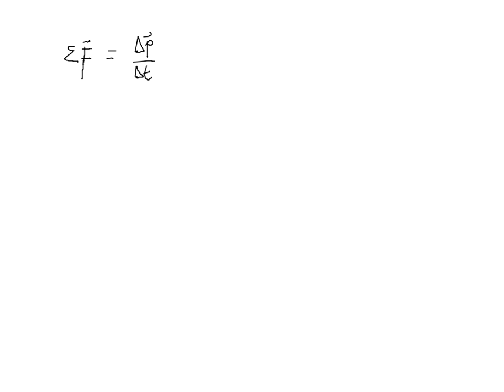The net force being zero is a special case of this equation. If the net force is zero, then the change in momentum would be zero, and that's what we've been discussing in previous lessons. But this time we will learn what happens if the net force on a system is not equal to zero.